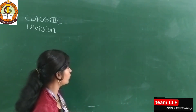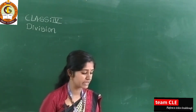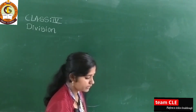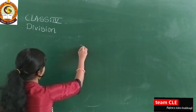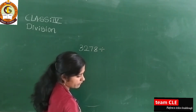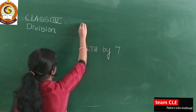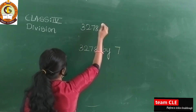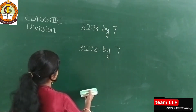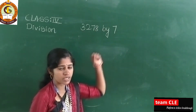In today's class we are going to discuss division — specifically dividing a four-digit number by a one-digit number. For example, 3278 divided by 7. This is a four-digit number and we are going to divide it by 7.